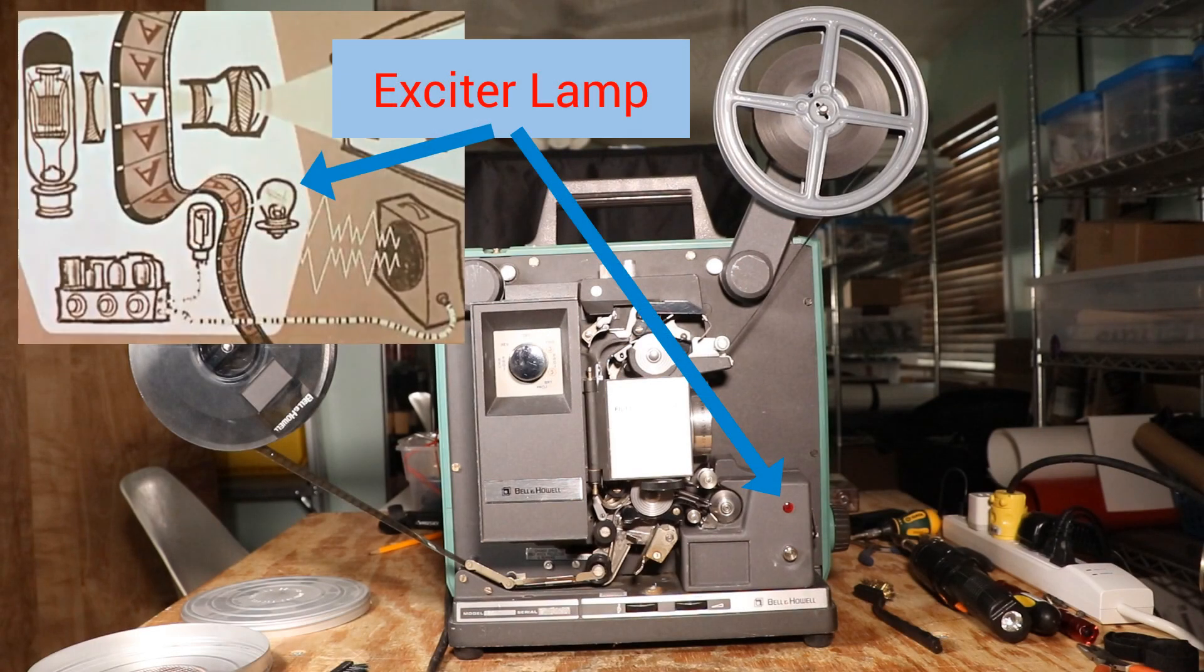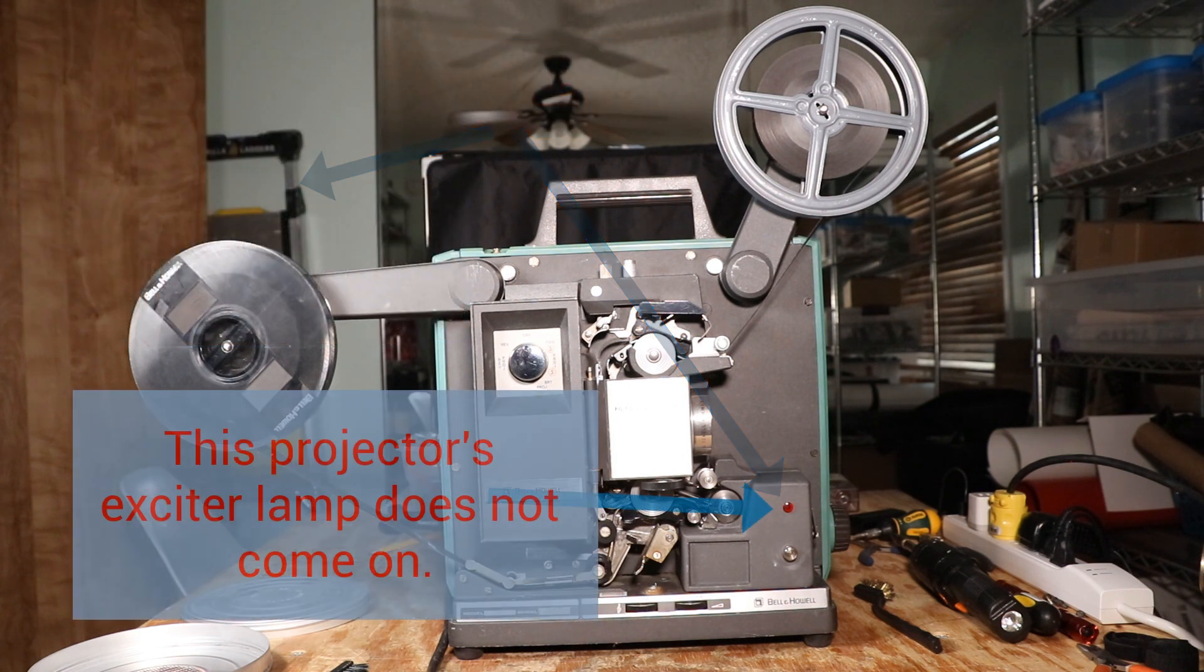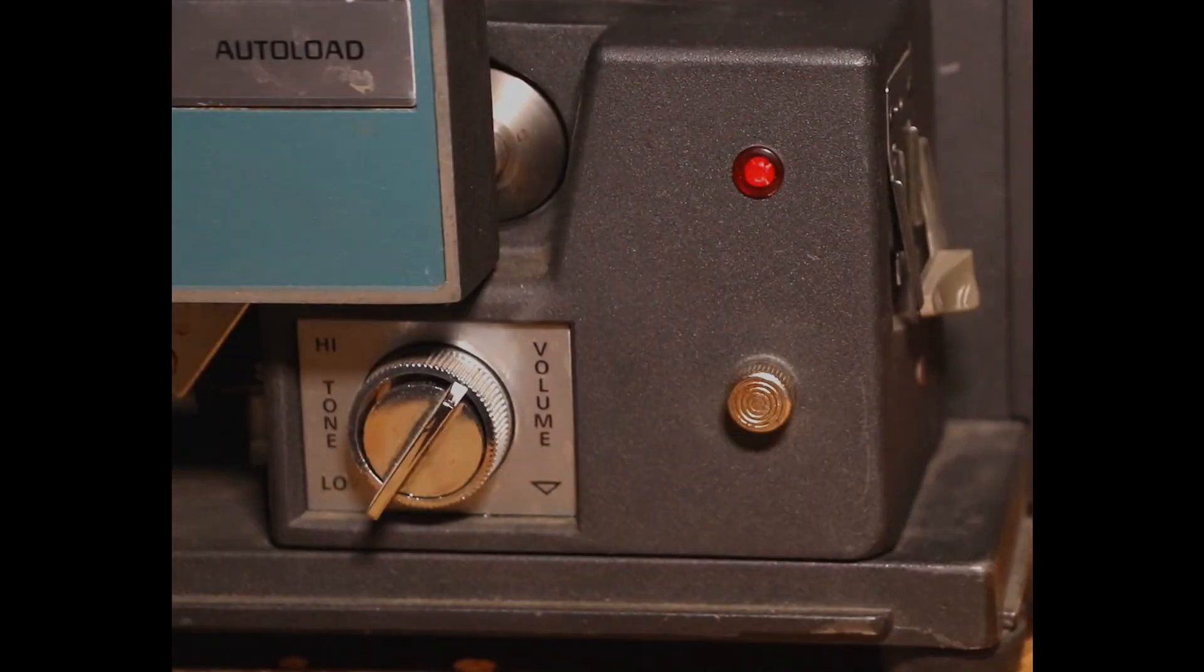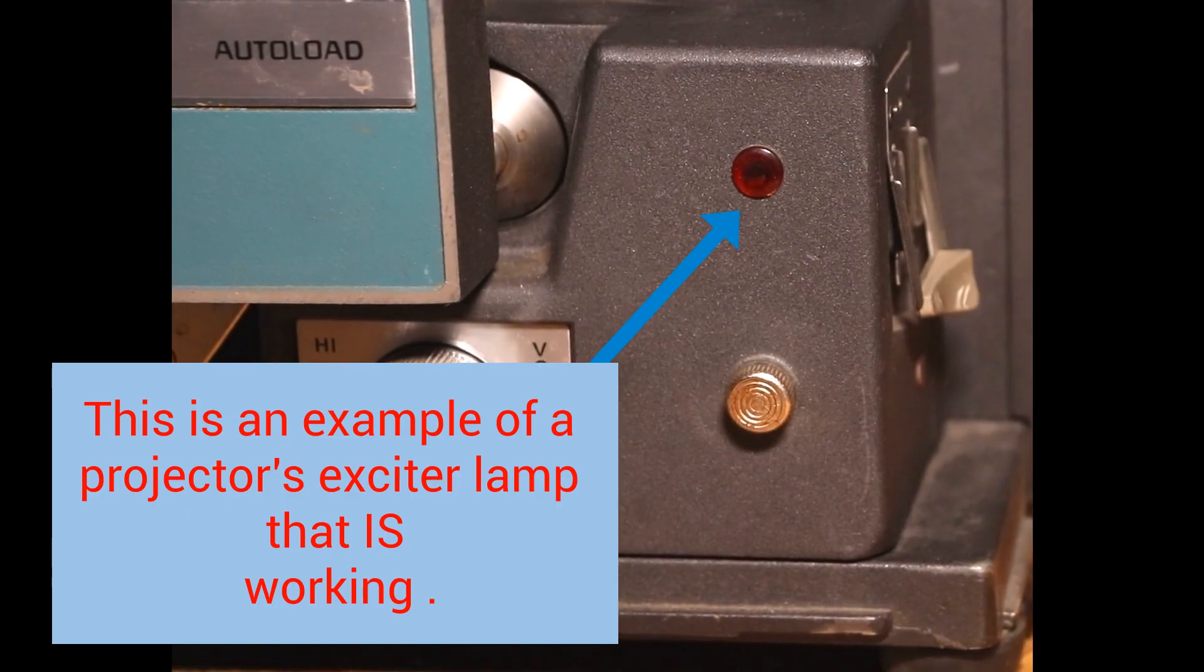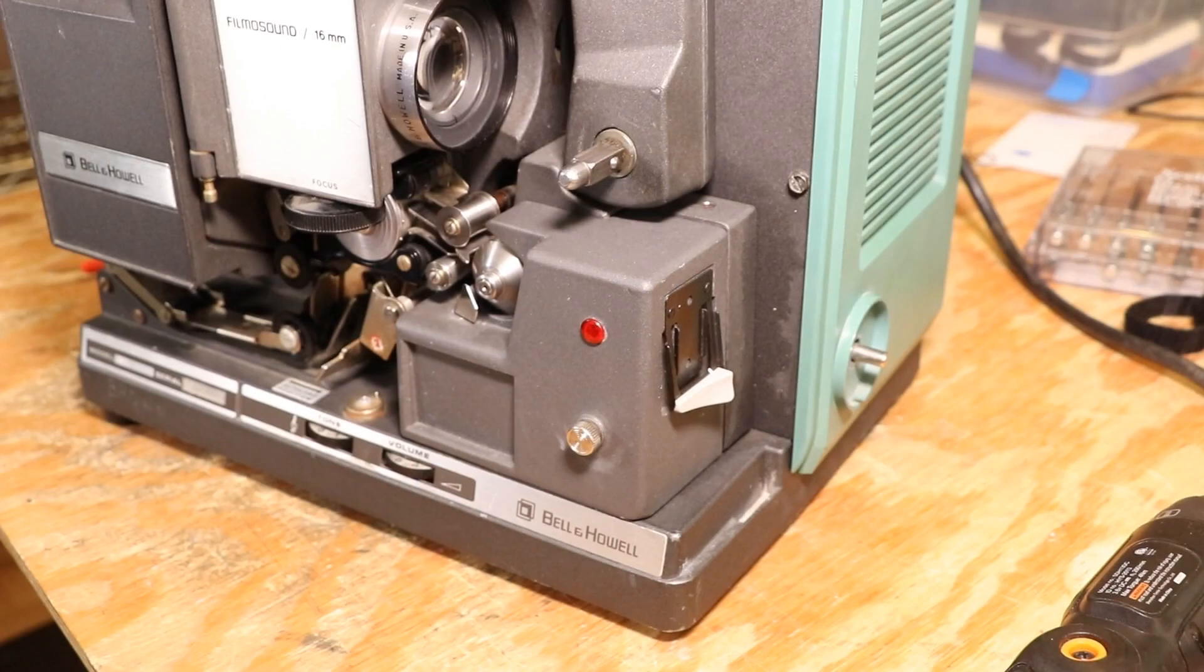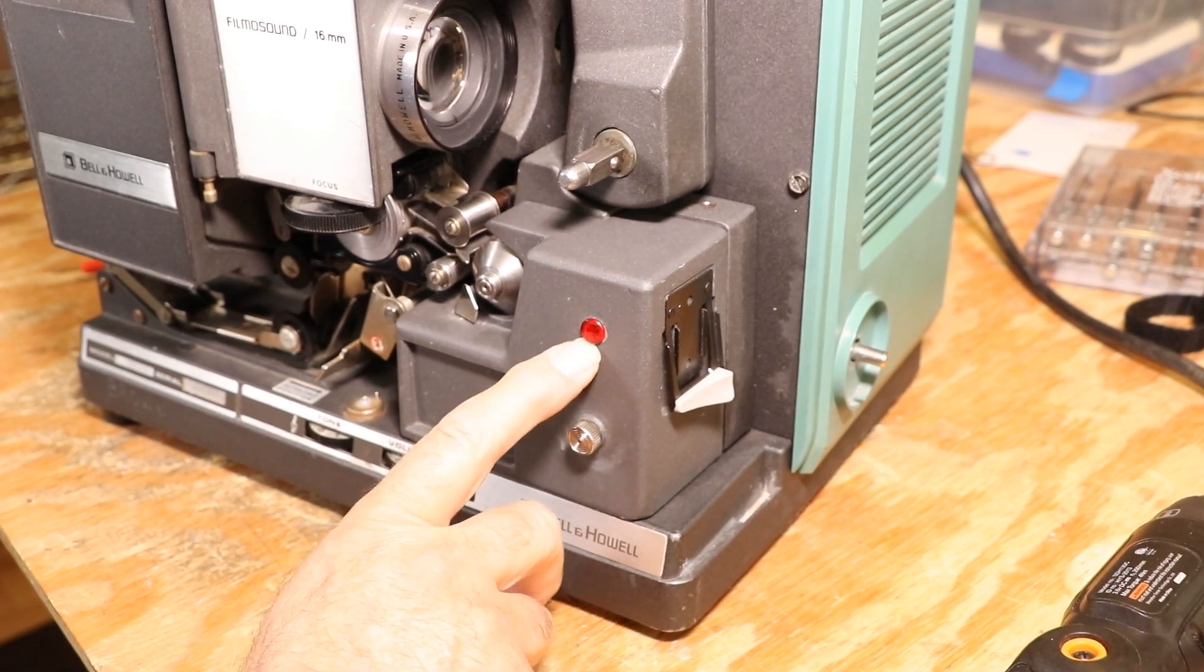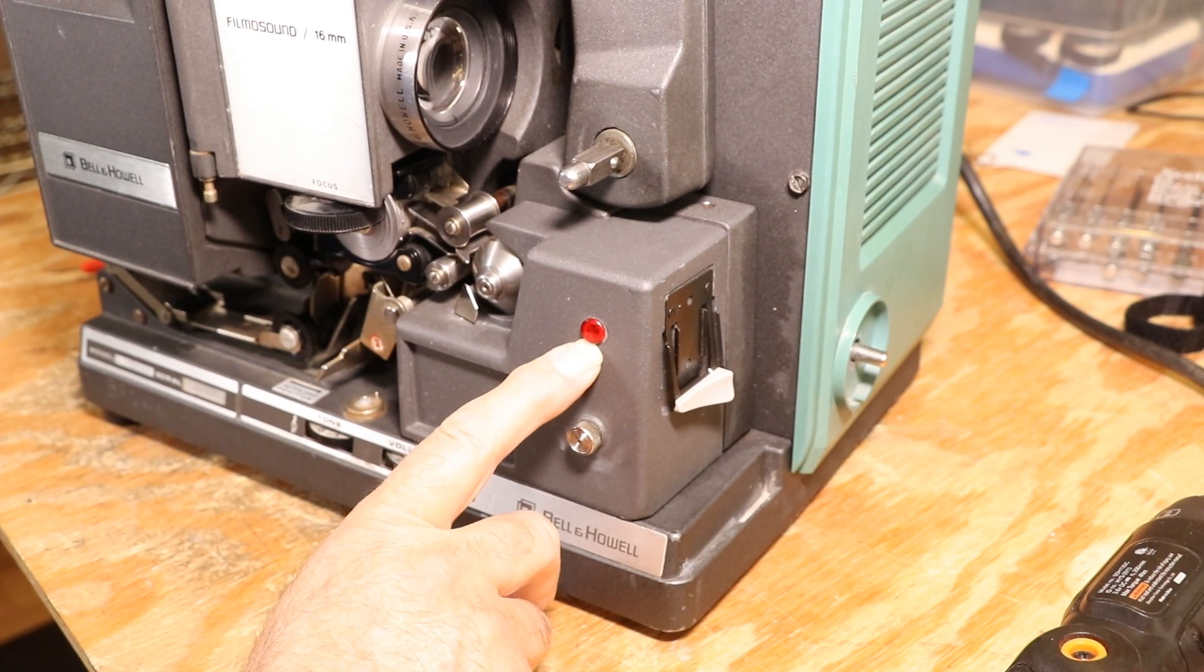So using our little retro diagram from the film clip, you can see where the exciter lamp is on a real Bell and Howell projector. And this projector's exciter lamp doesn't come on. So that's our first problem. Here's an example of an exciter lamp that's working. You can see the red light comes on. We've pretty much established that the exciter lamp is not coming on based on the fact that this little red indicator lens is not on.